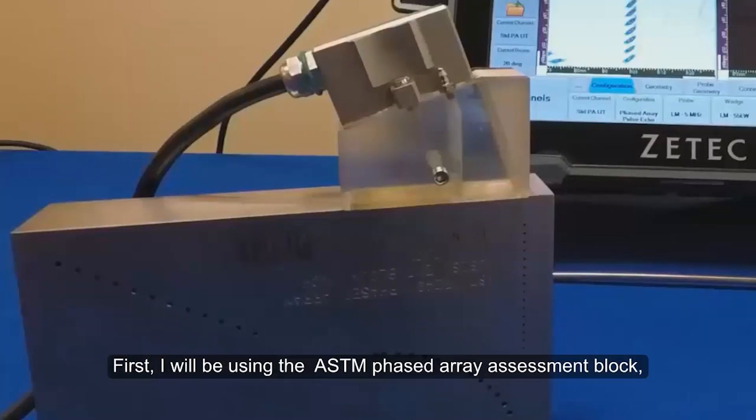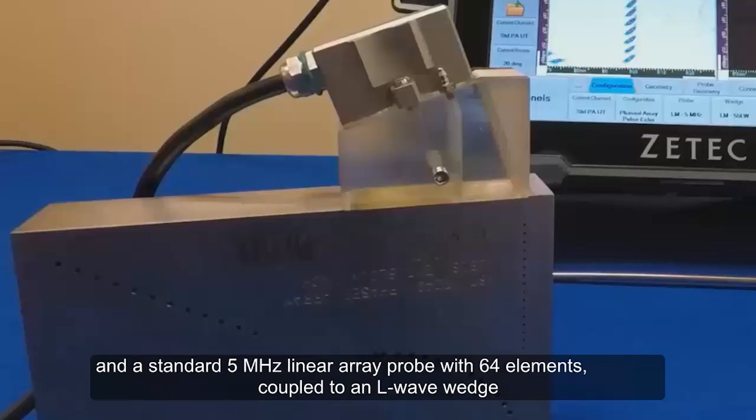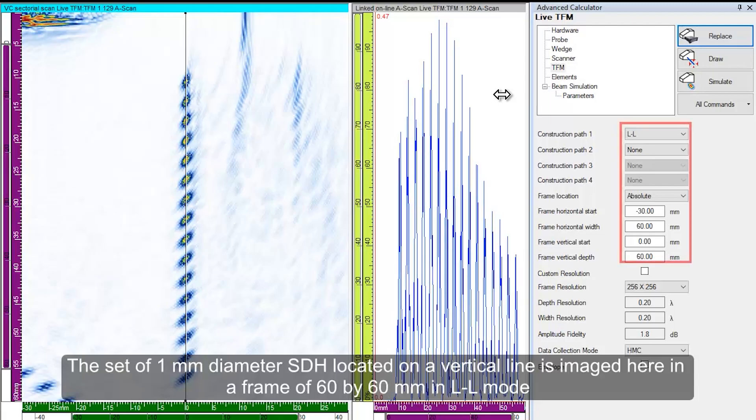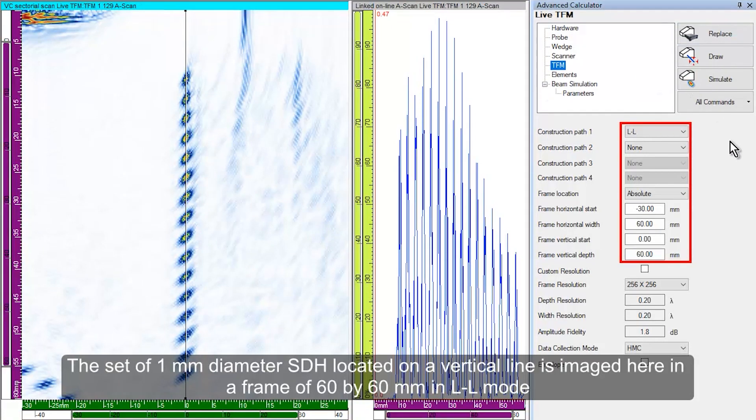First, I will be using the well-known ASTM phased array assessment block and a standard 5 MHz linear array probe with 64 elements coupled onto an L-Wave wedge. The set of 1 mm diameter side drilled holes located on a vertical line is imaged here in a frame of 60 by 60 mm in L-L mode.